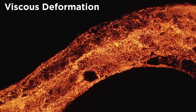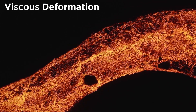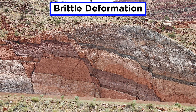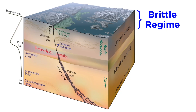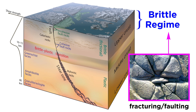Viscous deformation mainly describes the deformation of fluids. Rocks that deform in a brittle manner break instead of bend, and this behavior is most common at the surface. In fact, most rocks in the upper ten kilometers or so of crust tend to deform via mechanisms of brittle deformation — this is called the brittle regime. Here, fracturing and faulting are the main expressions of stress, though elastic deformation is also very common.